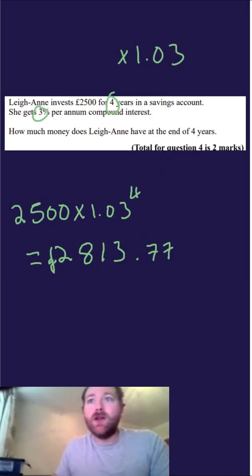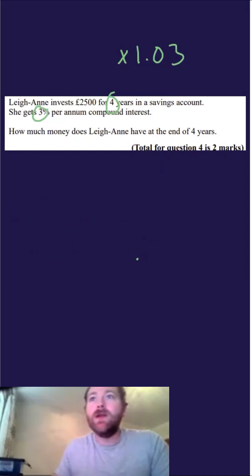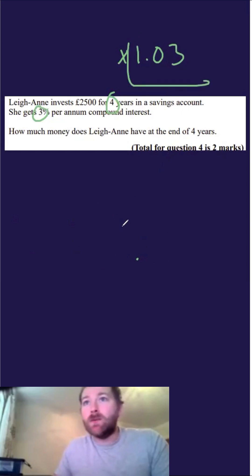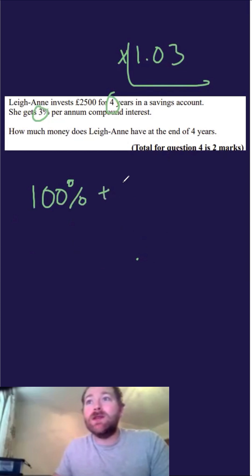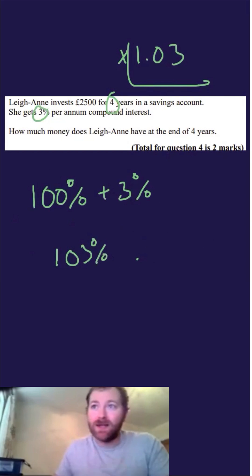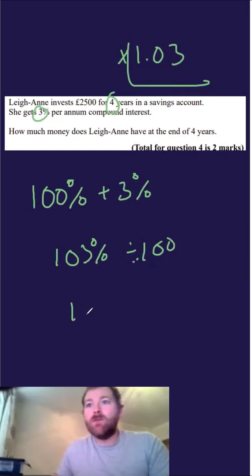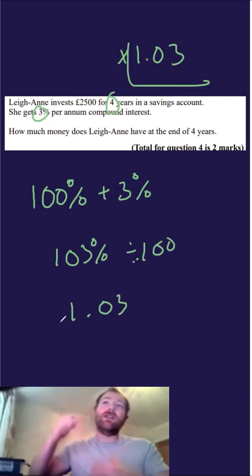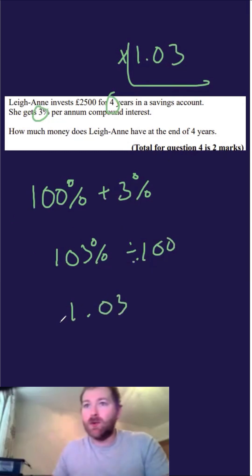So hopefully that part of the video made sense. But I think some of you might be struggling with where this 1.03 comes from. Basically, if we start at 100% and increase by 3%, this now becomes 103%. So if I want to turn 103% into a decimal, we must divide by 100, and this becomes 1.03. Because we're trying to increase this, we're going to be multiplying, and that's the percentage multiplier.